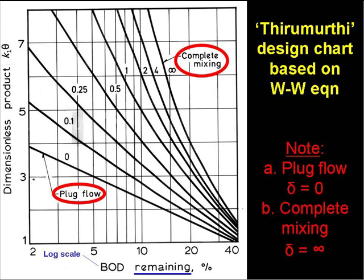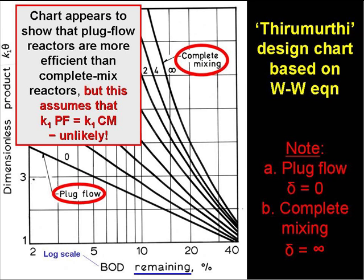If we look at 20% BOD remaining on the x-axis, and go up, we find that the value of K1 theta is somewhere around 0.7 or so for plug flow, and more or less exactly 4 for complete mixing. This might suggest that plug flow reactors are far more efficient than completely mixed reactors, and most people hold to this view. It's certainly true if the value of K1 is the same in both types of reactor, both treating, of course, the same wastewater, but this may not generally be the case.